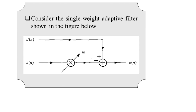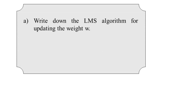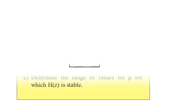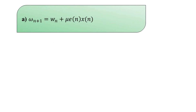For the adaptive filter structure, w denotes the weight. We have a summation block where d(n) is added, and x(n) is passed as input to the filter through the weight coefficient w, which is then subtracted to produce the error signal. In part a, we write down the LMS algorithm to update the weight w.